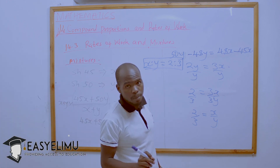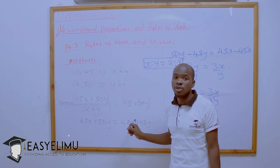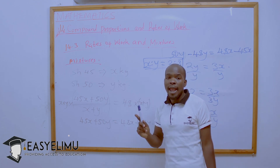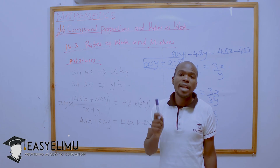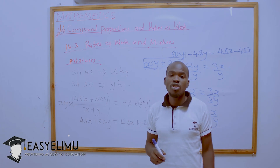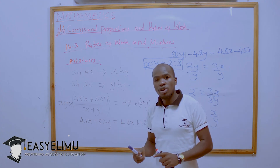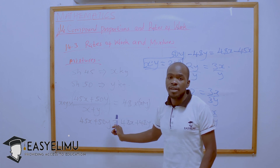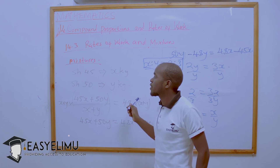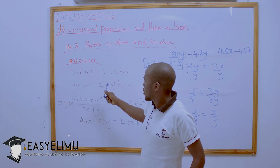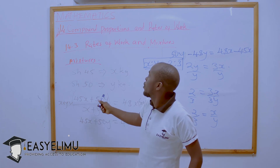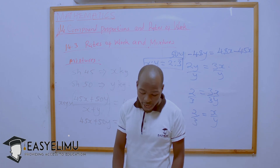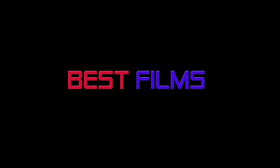We have seen different ways to handle mixture problems — either assuming N kg mixed with 1 kg, or using two separate variables X and Y. This experience will help you solve any mixture problem. With that we have come to an end of compound proportion and mixtures. I hope it has been interesting. Thank you for watching, see you in our next video.